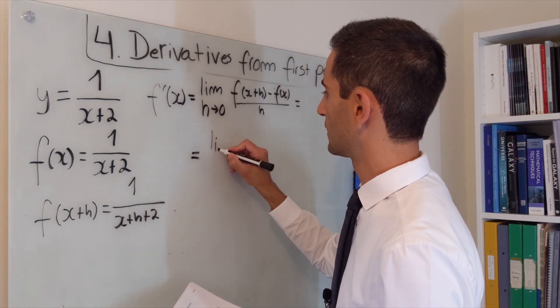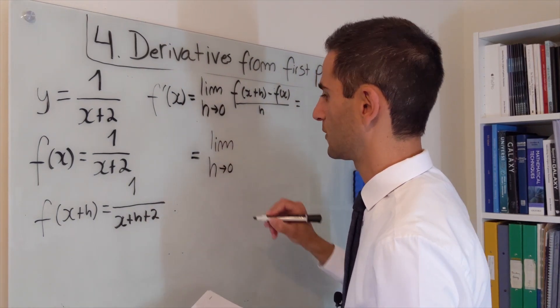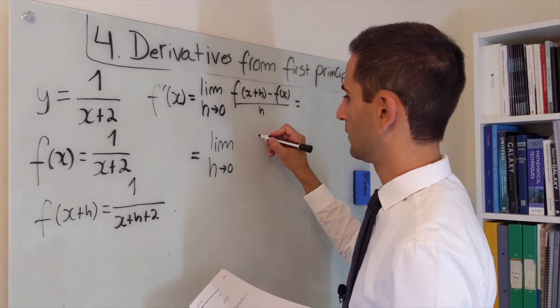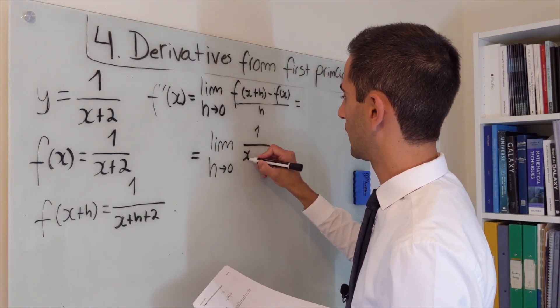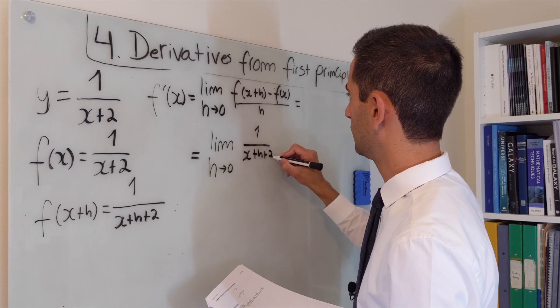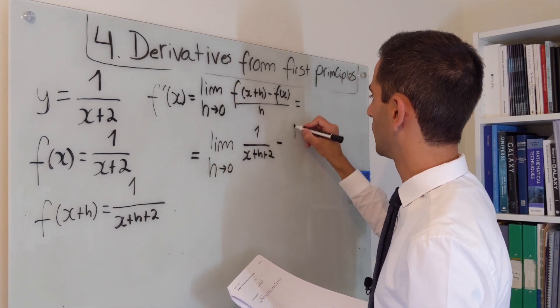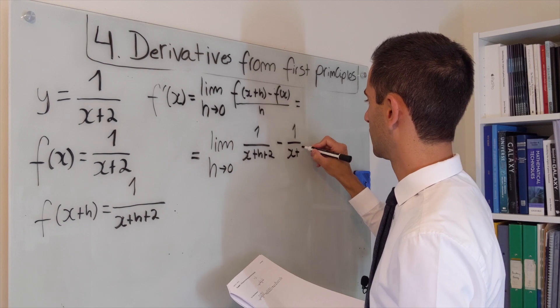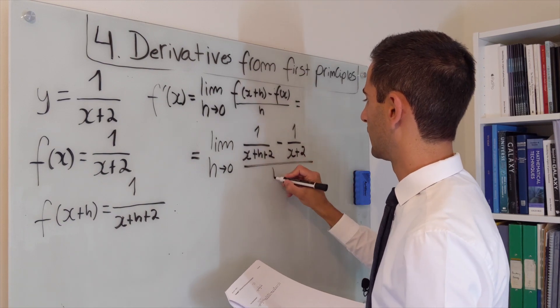So this is the limit when h goes to 0 of 1 over x plus h plus 2 minus 1 over x plus 2 divided by h.